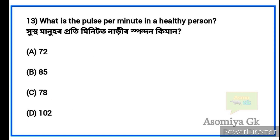Next question: What is the pulse rate per minute in a healthy person? Option 72. The normal pulse rate of a healthy person is 72 beats per minute.